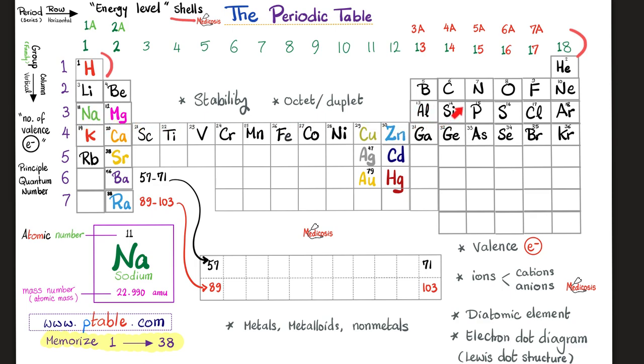How about sodium, magnesium, aluminum, silicon, all of these? They have three shells. Anything in the fourth row has four shells. In the fifth, five shells. In the sixth, six shells. In the seventh, seven shells of electron.